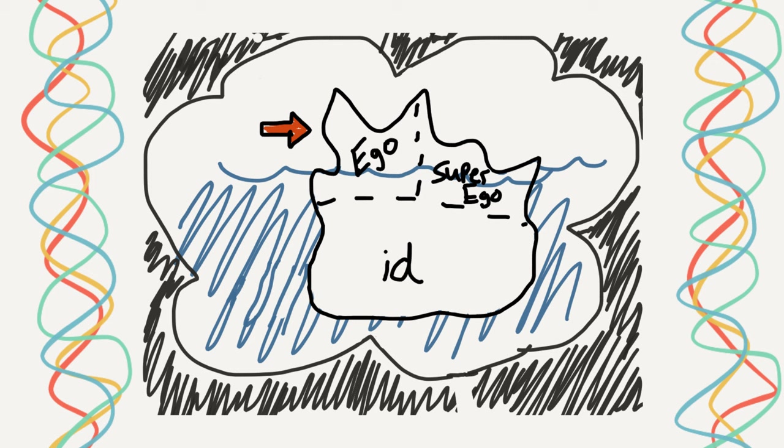Now, this is based on the conscious level in which we can access the information in our mind. Right next to it is something called the superego. Now, this is more on a preconscious level. It's outside of our awareness, but is still accessible.